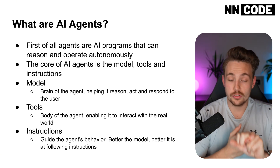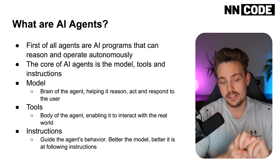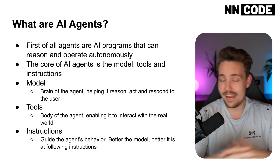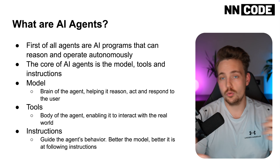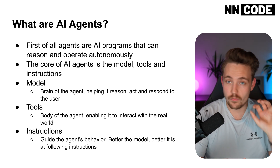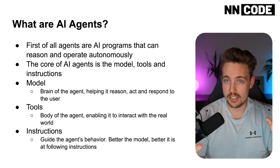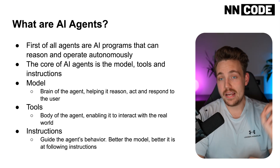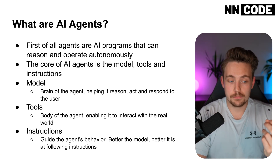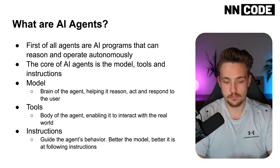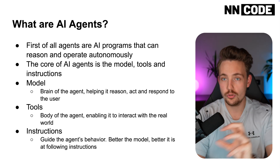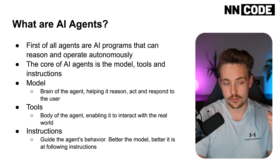Then we can have different tools — this is the body of the agent. It enables the agent to interact with the real world. Everything can act like a tool; we just need to construct it and wrap it up as a tool. We also have MCP servers now, and the agents can have access to multiple tools. Based on the input, the agent will do the reasoning, choose what tools to use, take the actions, and then generate a response.